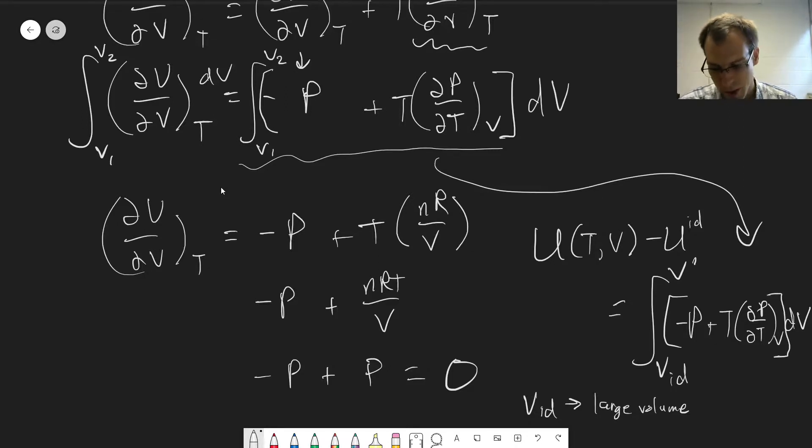We can find that derivative, put it into here, integrate it, probably numerically, and get a value for how the internal energy changes with volume at constant temperature.